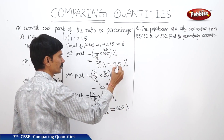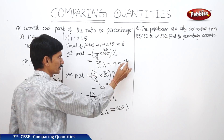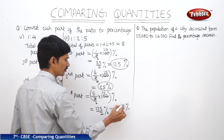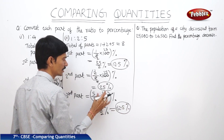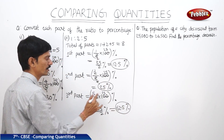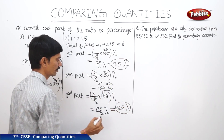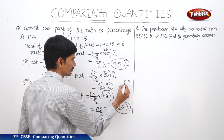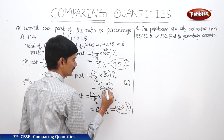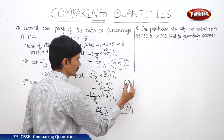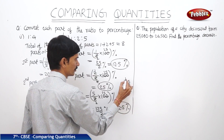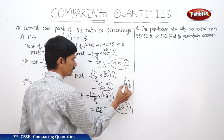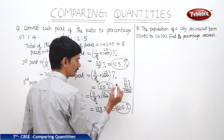When you add these three parts — 12.5%, 25%, and 62.5% — we get 100%, which verifies our answer. Adding 12.5, 62.5, and 25.0 gives 100.0, which means 100 percent.